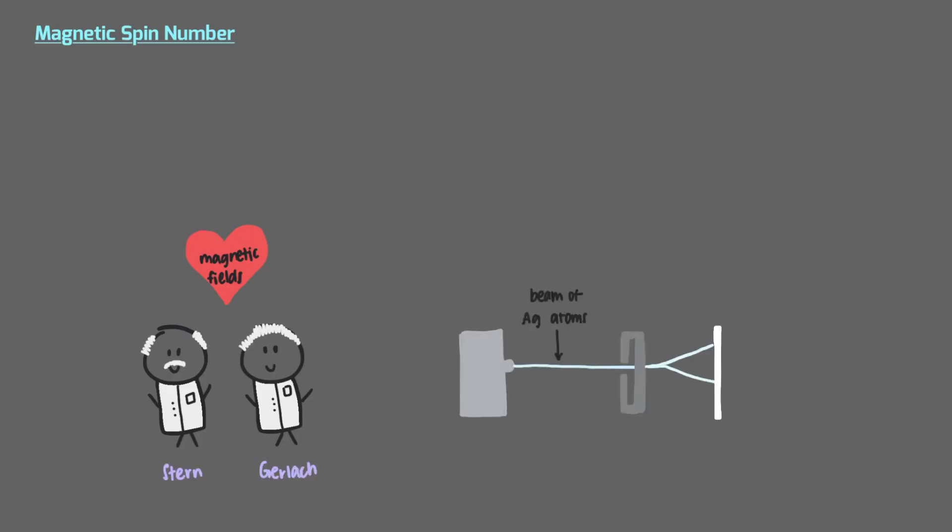Two scientists, Stern and Gerlach, put a beam of silver atoms through an inhomogeneous magnetic field to see what would happen. They observed where the beam landed and expected the single beam to land in a single spot. But of course, that's not what happened. The single beam split into two distinct parts.